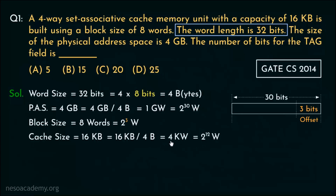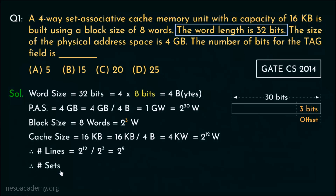Therefore the cache size in terms of words is 2 to the power 12. Finding the number of lines by dividing the cache size by the block size gives us 2 to the power 9, because 12 minus 3 is 9 — so there are 2 to the power 9 lines inside the cache. Finding the number of sets by dividing 2 to the power 9 by the set size of 4 (or 2 squared) gives us 2 to the power 7. So 7 bits will be used for the set number.